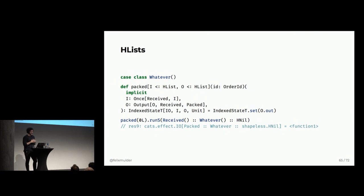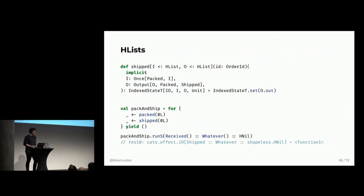But simply put, what it does is that that it makes sure that received, in this case of packed, exists once within this HList I, which would be the input state to your program. And then the output here would compute a new HList that contains the same states that it had before except received and replacing the received state with the packed state. So, therefore, you could use the same thing, index state T set O dot out. And now you can see that I run this packed 0 L run as I get back received whatever in HL. So, that seemed to work. And then, of course, let's also see that we can combine it in the for comprehension. So, you can do the same thing with shipped. It takes two implicit parameters. And then it returns an index state IO and unit. And you can see that in the end here, we have fixed this with the help of shapeless.